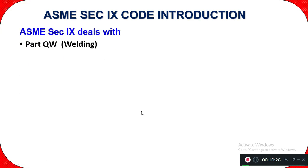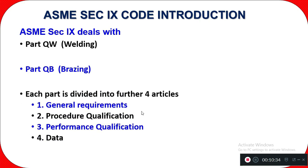ASME Section 9 deals with two main parts: Part QW for welding and Part QB for brazing. Each part is divided into four articles: Article 1 — general requirements; Article 2 — procedure qualification; Article 3 — performance qualification; and Article 4 — data, meaning the data from articles 1, 2, and 3 that should be recorded and documented.